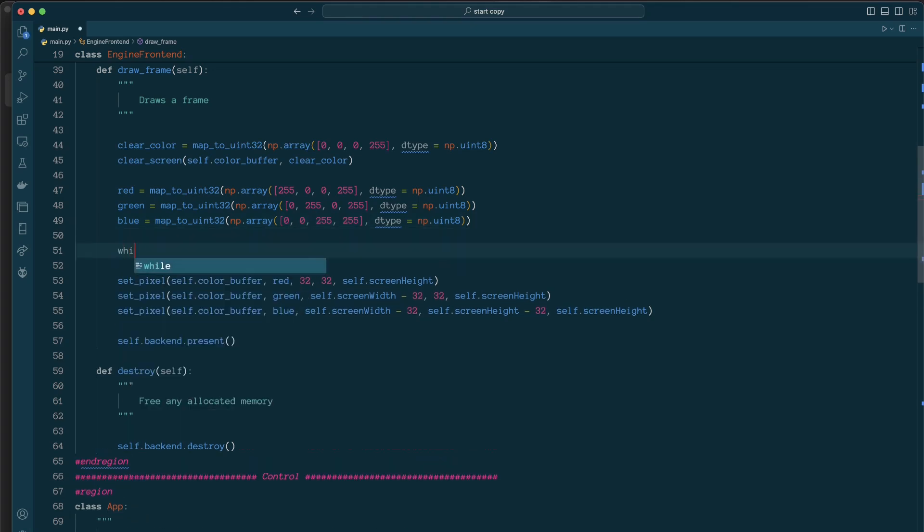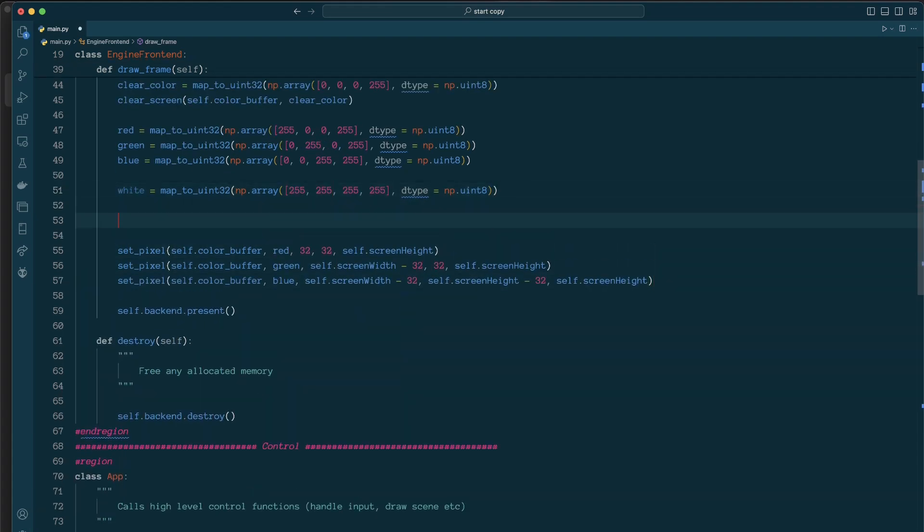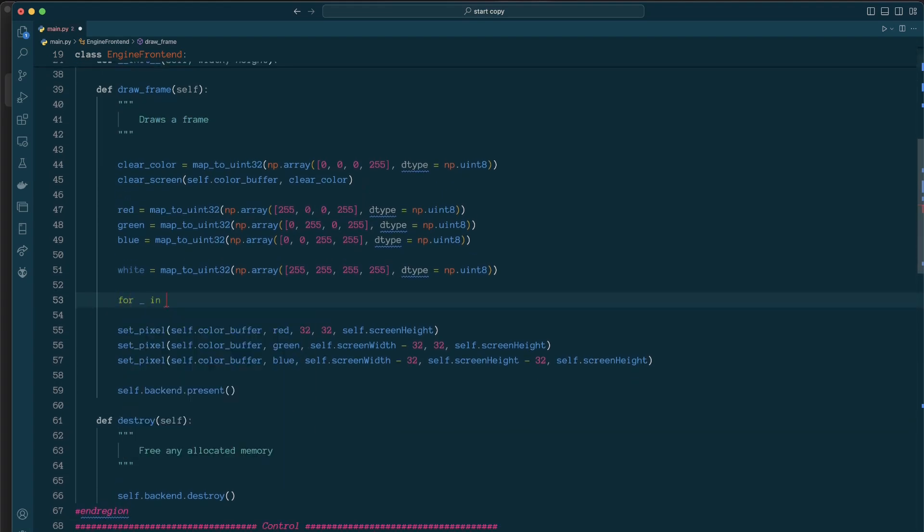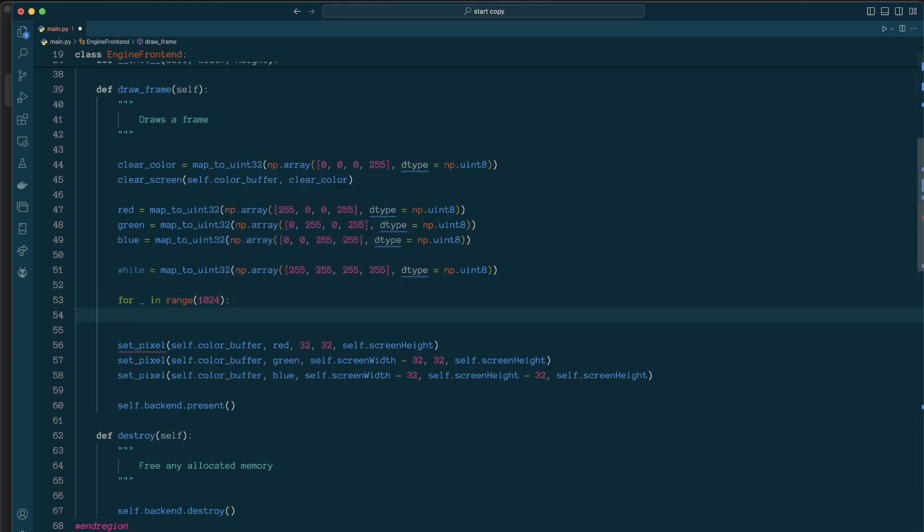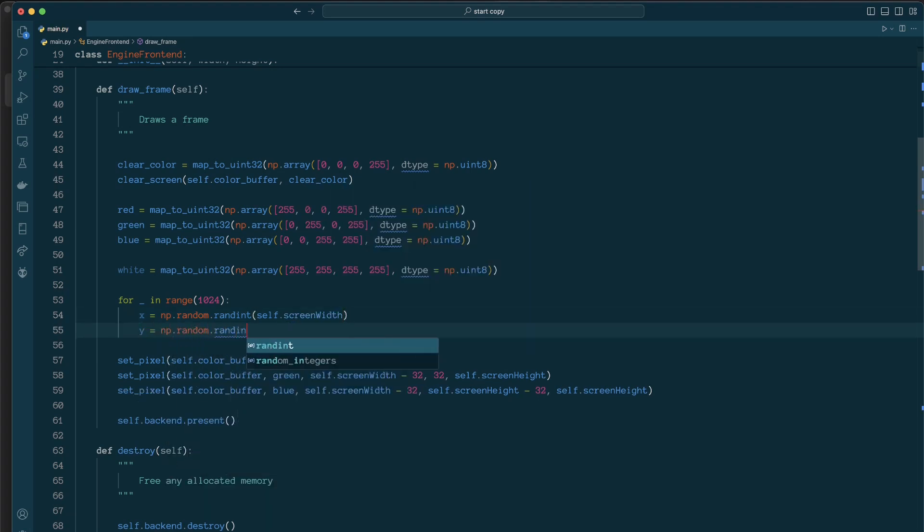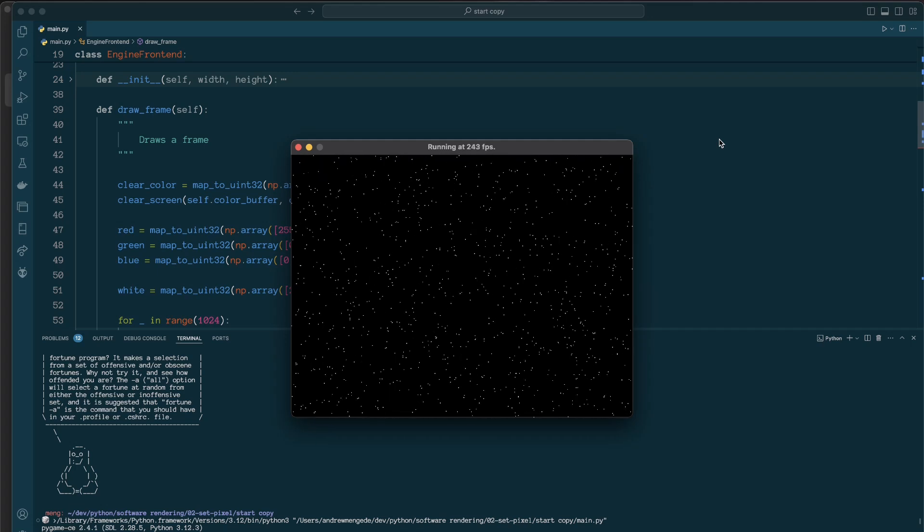Let me just go ahead. We'll have some fun. So I'm going to draw some static, a whole bunch of white pixels. We'll go for 1024 samples, I guess. For each of these, we're going to pick out a random X and Y. Just like that. Give that a go. There we have it. Nice. A whole bunch of stuff. Now see that we're, our performance has gone down considerably.